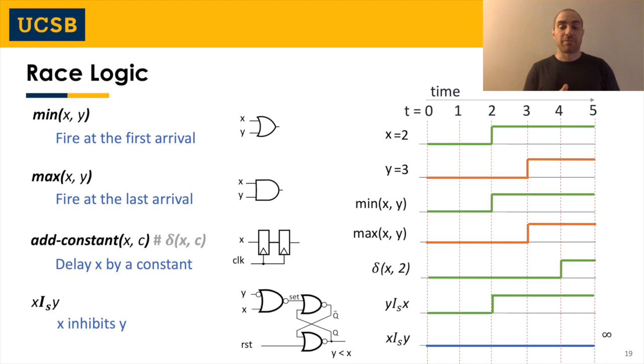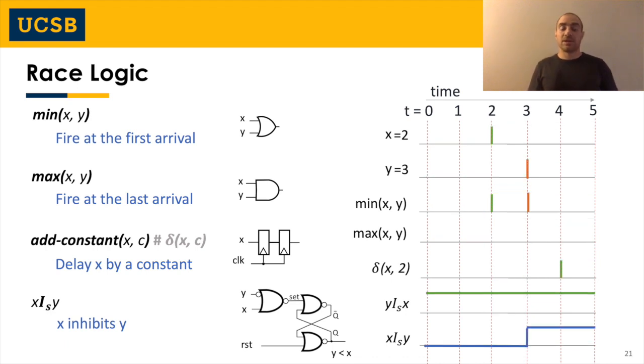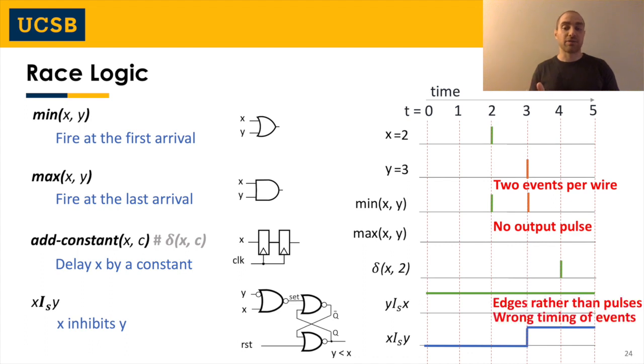What happens though if pulses rather than edges are used? Judging by the given example, such a change is going to cause a number of problems. For instance, the OR gate now is going to fire two output pulses, which violates one of the basic race logic constraints for at most one event per wire, while the NAND gate is not going to fire any pulse at all. In the case of inhibit, we are going to have edges rather than pulses, which violates our assumption about a pulse-based system, while all these events suffer from wrong time too. So obviously, if we would like to port this idea from an edge-based system to a pulse-based one, we have to rethink about the implementation of all these operators.